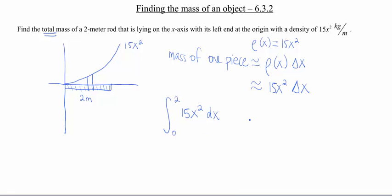So this is a fairly nice function to integrate. That ends up giving me an anti-derivative of 5x³. And I'm going to go ahead and apply the fundamental theorem of calculus. Throw in your endpoints, throw in a 2, throw in a 0. And you're going to end up with a grand total then of 40 for our mass.